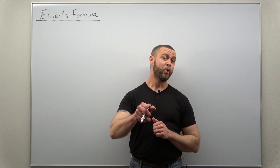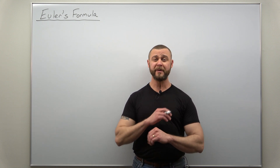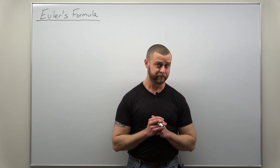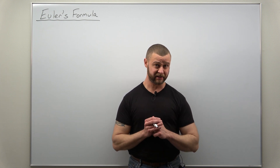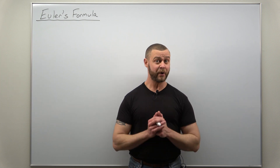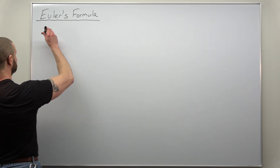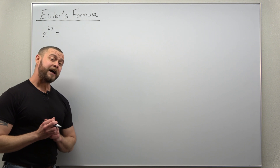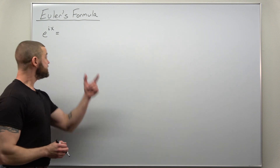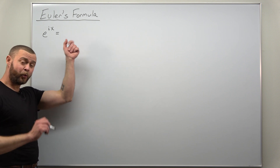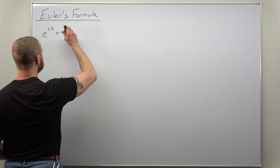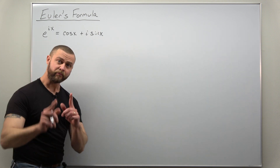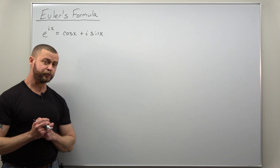Greetings fellow mathematicians! We're going to take a look at one of the most important formulas in all of science, engineering, and mathematics — Euler's formula. This formula is completely non-obvious, so there's no real simple way to motivate it, so let's just go ahead and state it. The standard version is e to the ix, which establishes a relationship between exponential functions and trig functions: e^(ix) = cos(x) + i·sin(x), where i is the imaginary unit, the square root of negative one.